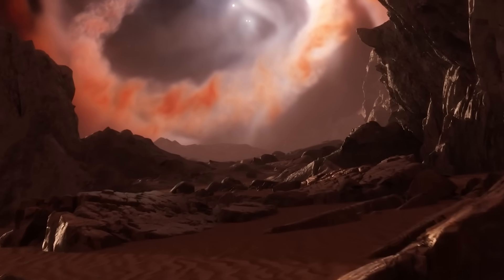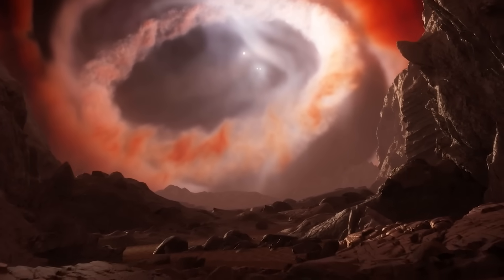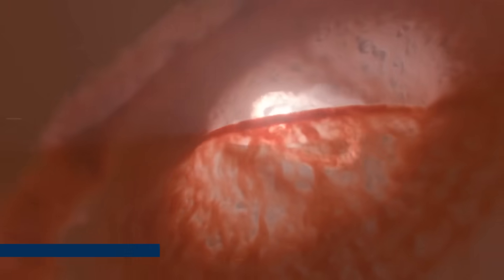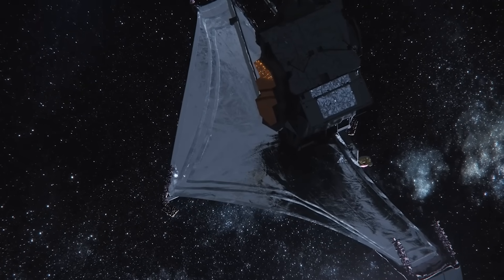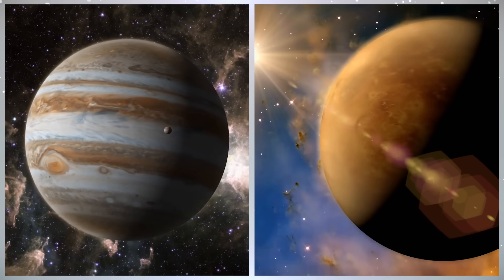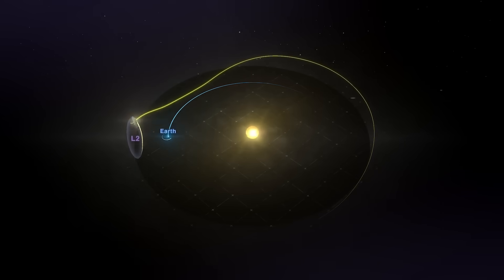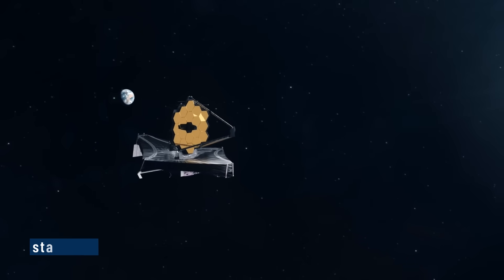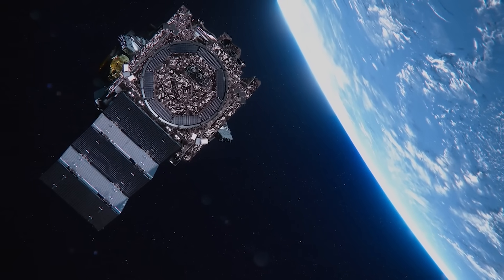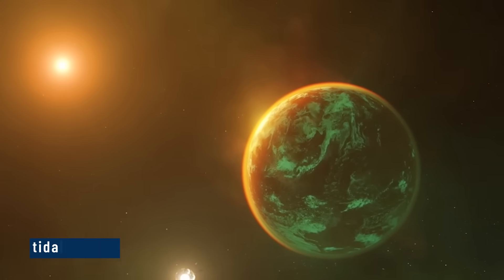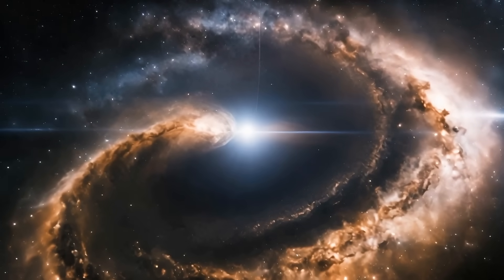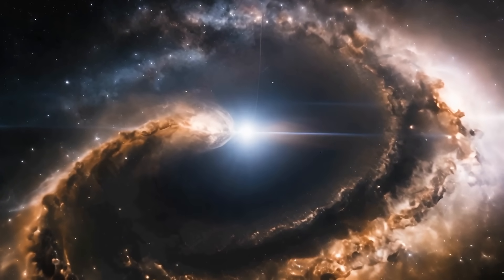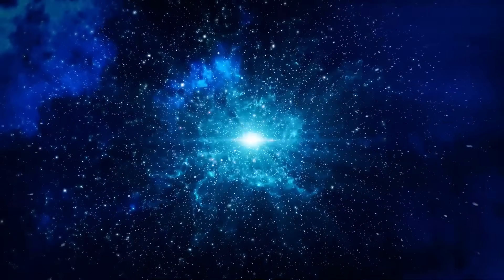First, the planet looks rocky. Its surface reflects light the way rock and dust would, not like a gas planet or a world covered in thick clouds. That's important - it means we're likely dealing with a solid surface. Second, there's a clear temperature difference across the planet. One side is warmer, probably the side facing the star 24/7. The other side is darker and colder, always turned away. This kind of tidal locking creates extreme environments, but it also means that in between those two sides - the twilight zone - temperatures might be more stable.